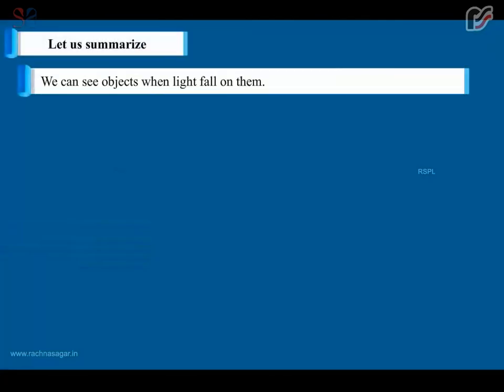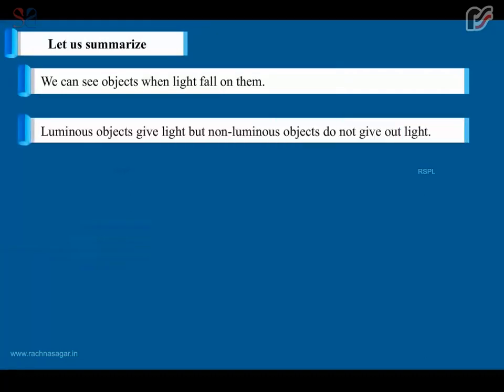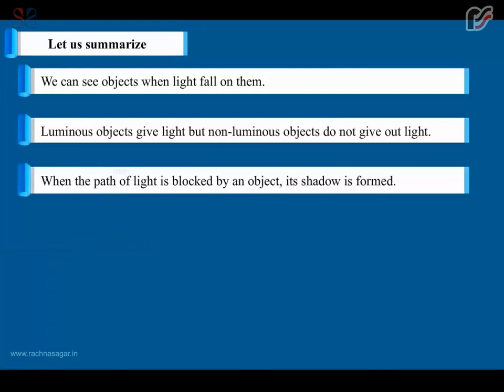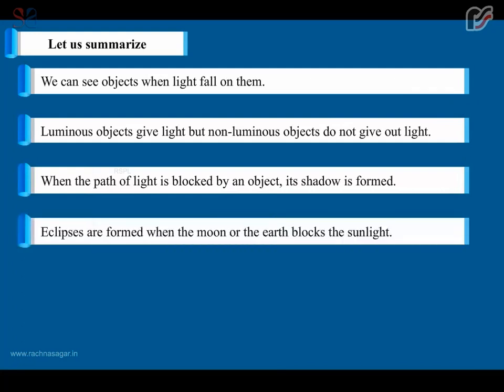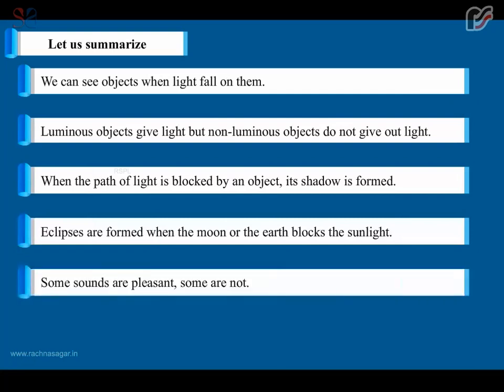Let us summarize. We can see objects when light falls on them. Luminous objects give light but non-luminous objects do not give out light. When the path of light is blocked by an object, its shadow is formed. Eclipses are formed when the moon or the earth blocks the sunlight. Some sounds are pleasant, some are not. A push or pull is called force.